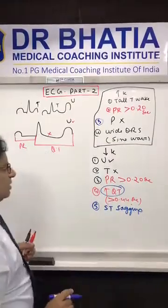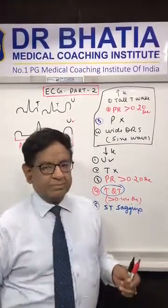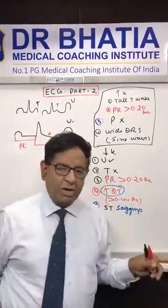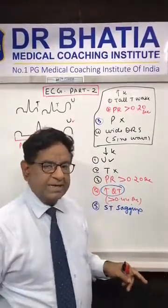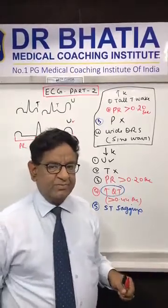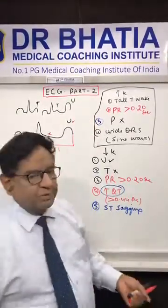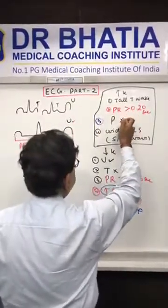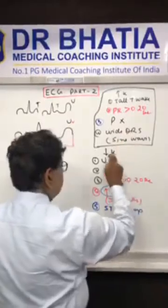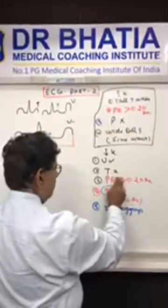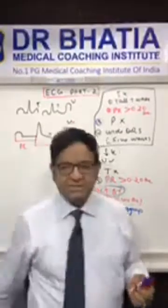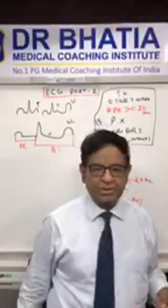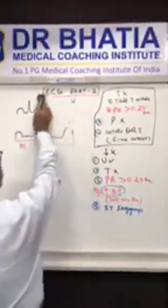Quick recap of hypokalemia: U wave appears, T disappears, prolonged PR, prolonged QT, and sagging of ST. So there are five keywords. The entire potassium topic you can revise in just seconds: for hyperkalemia — tall T wave, prolonged PR, P disappears, sine wave; for hypokalemia — U appears, T disappears, long PR, long QT, and ST sagging. Potassium is a very important topic for exams.